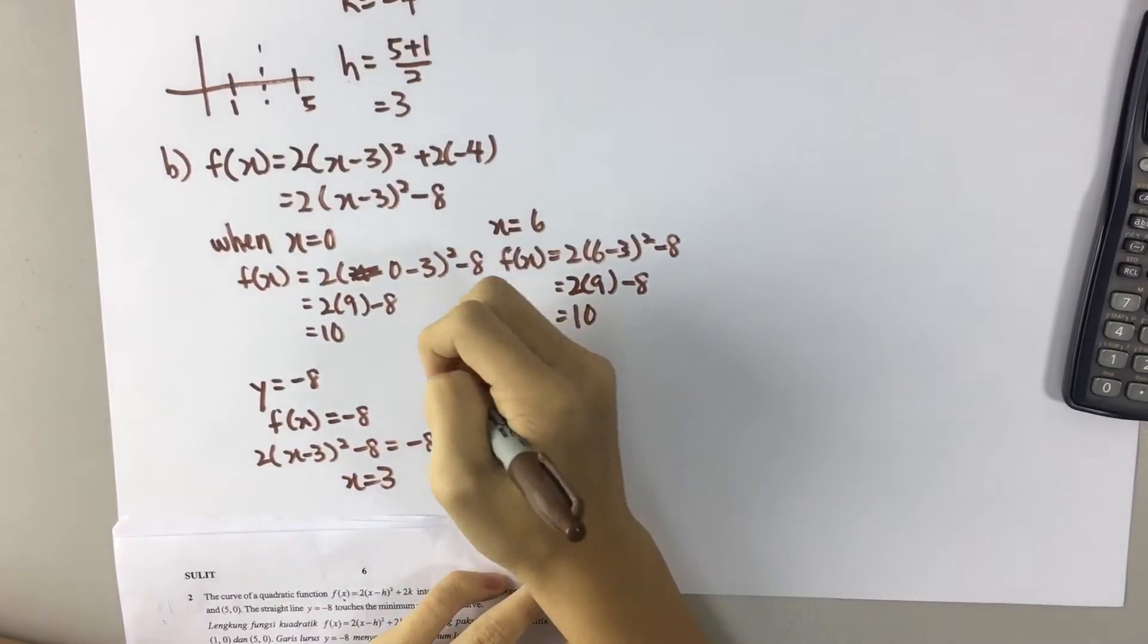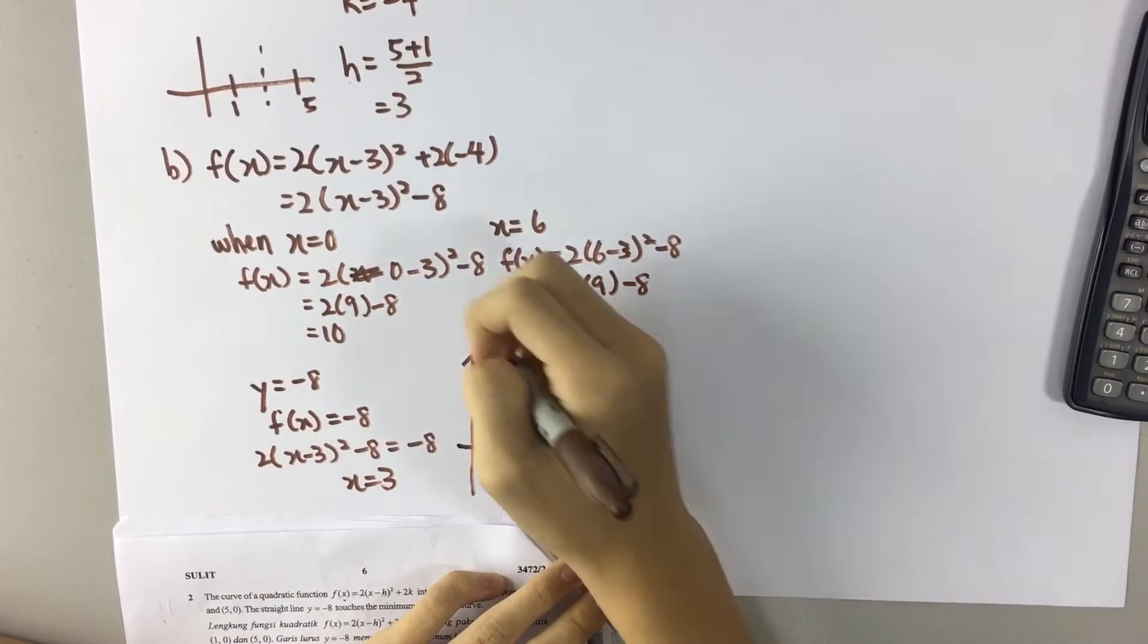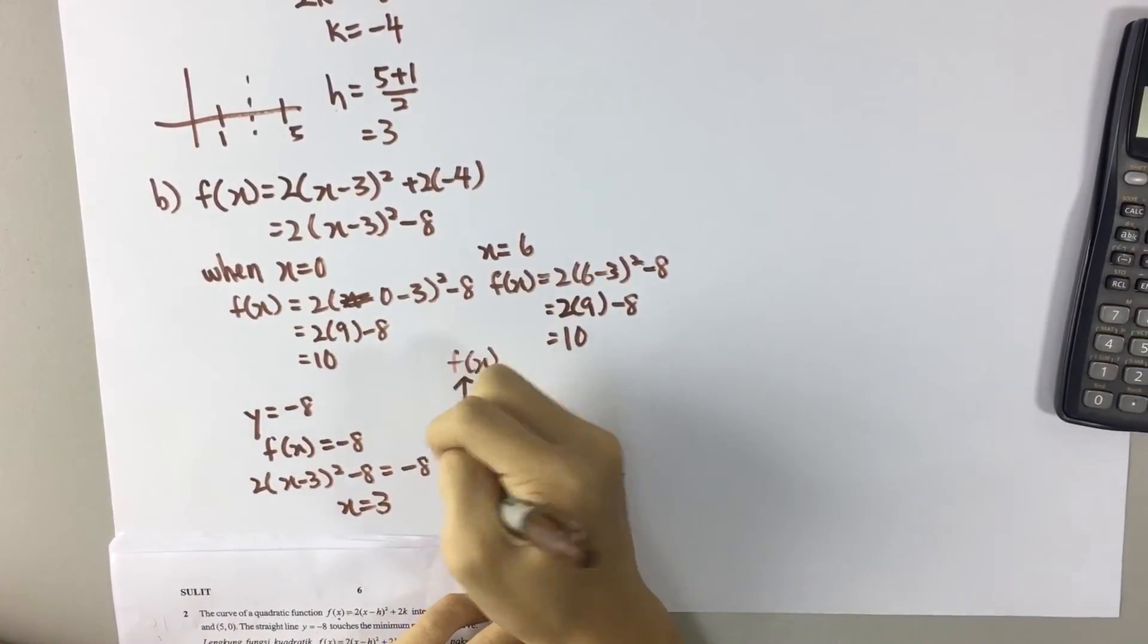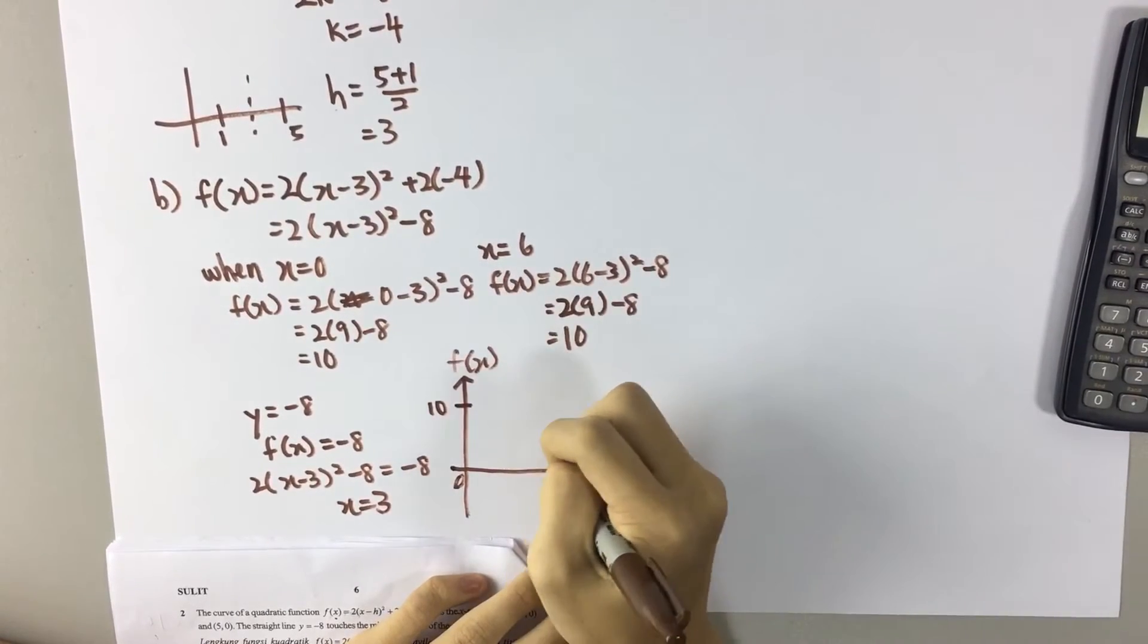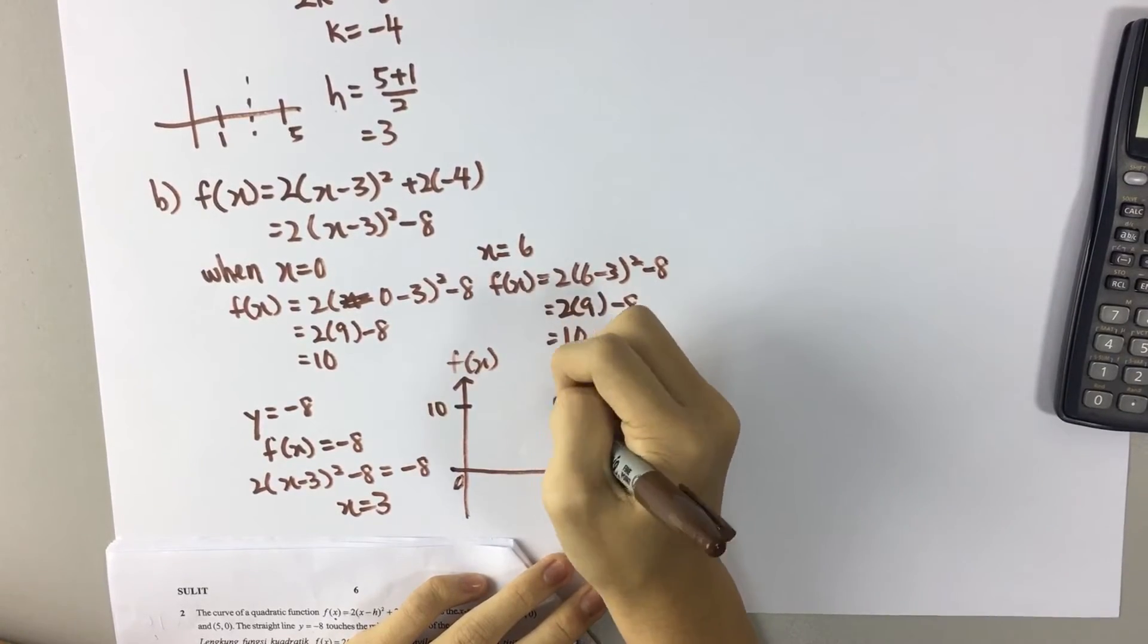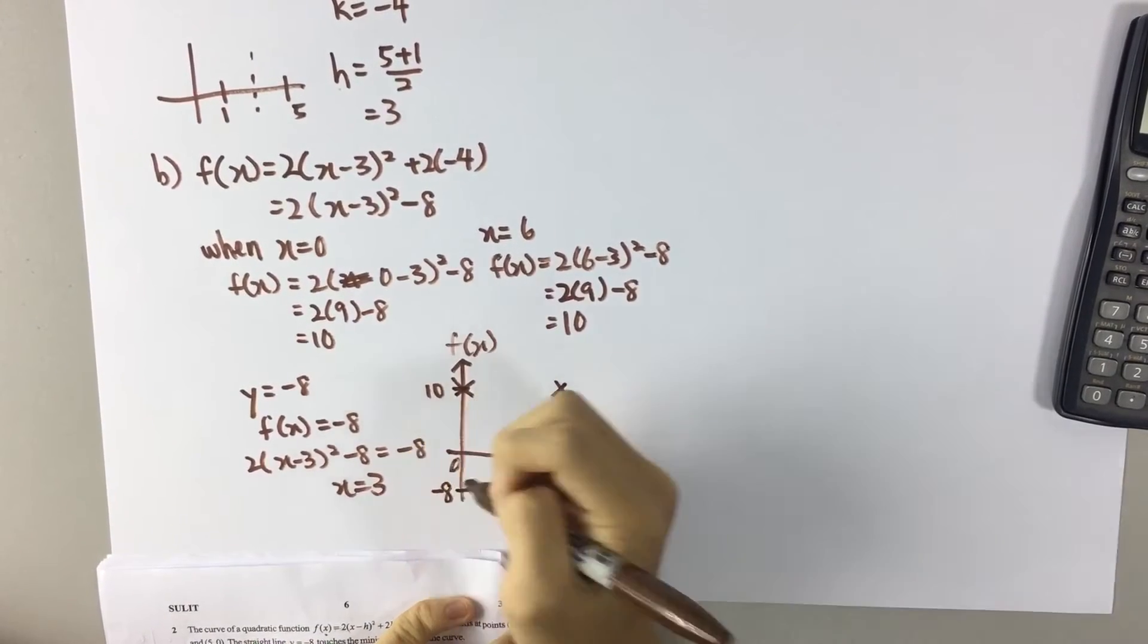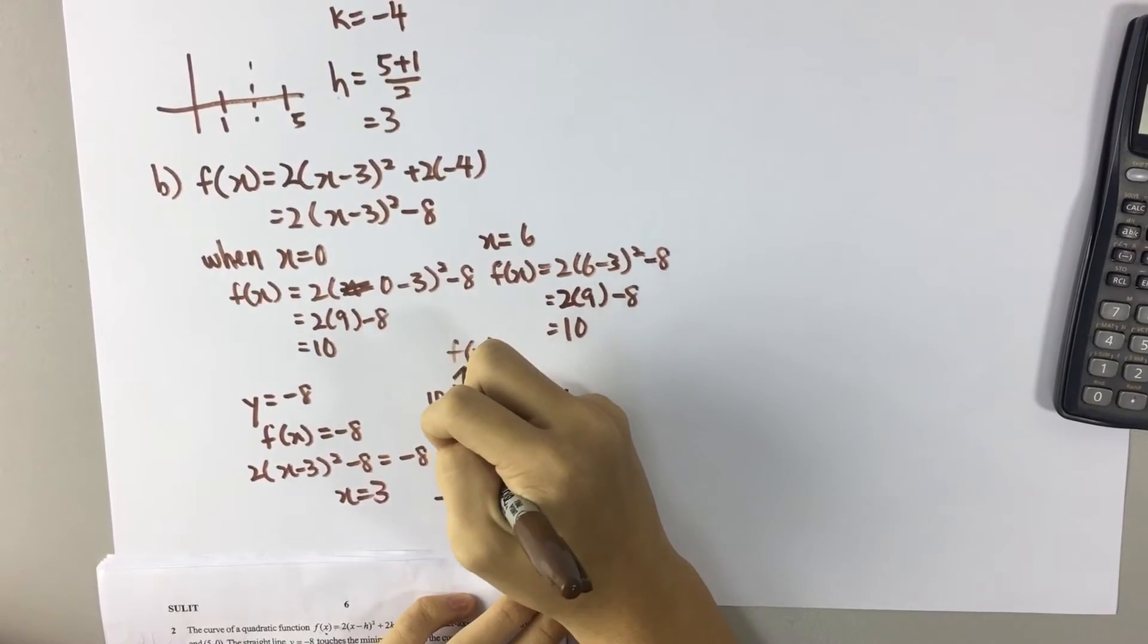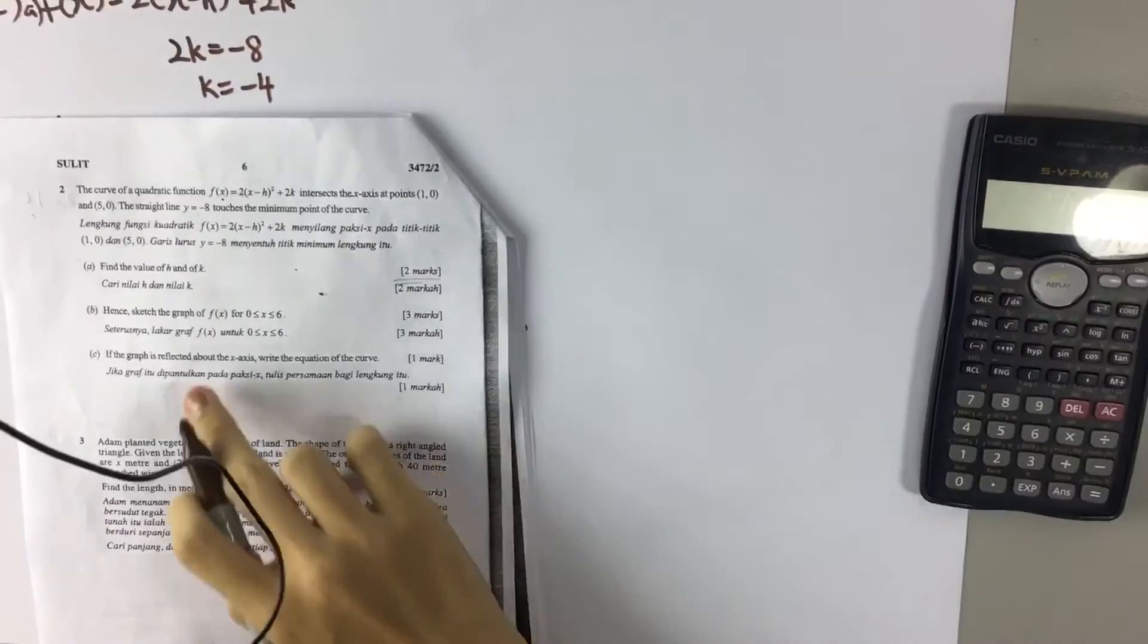So you now can sketch the graph. Plot the points and sketch it. This is for part B.